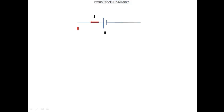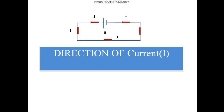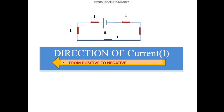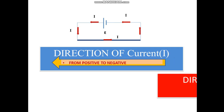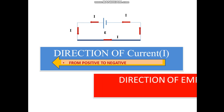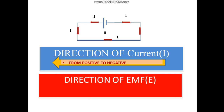Let us consider the circuit. This is a closed circuit with current. The direction of current is from positive to negative. The direction of conventional current is from negative to positive.